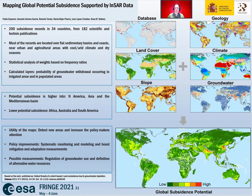The most significant results are that potential subsidence is high or very high over 2.2 million square kilometers — 1.6% of the global surface — and 1.2 billion inhabitants, representing 19% of global population.